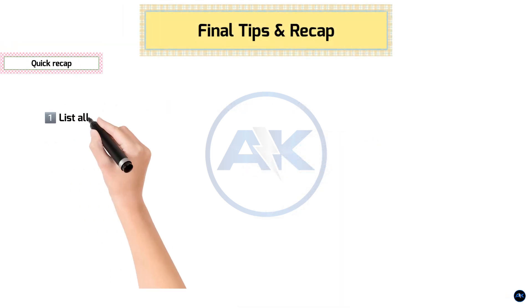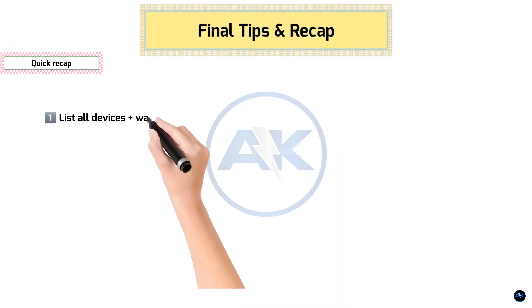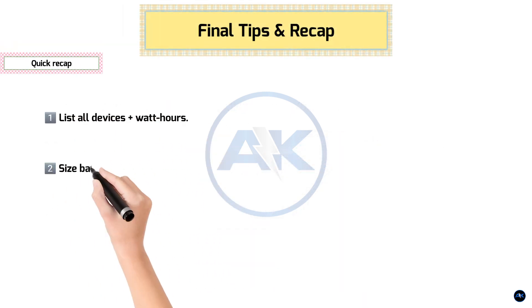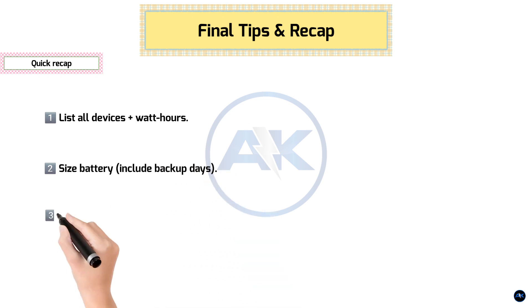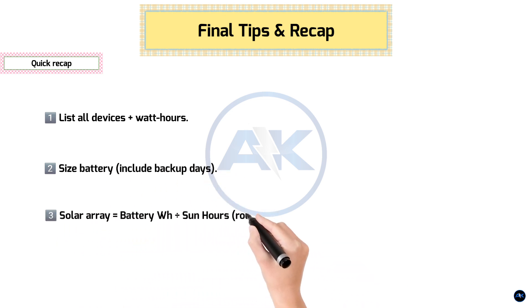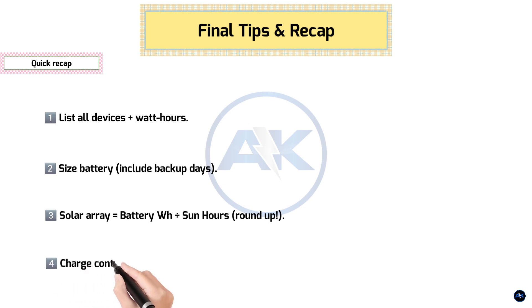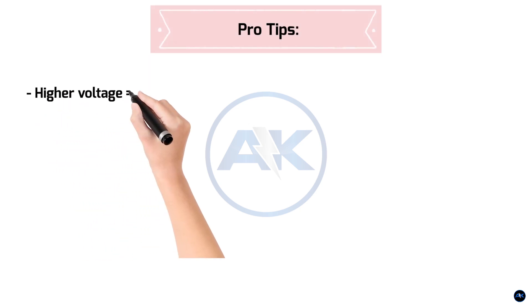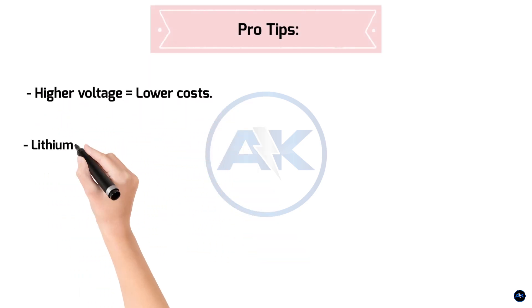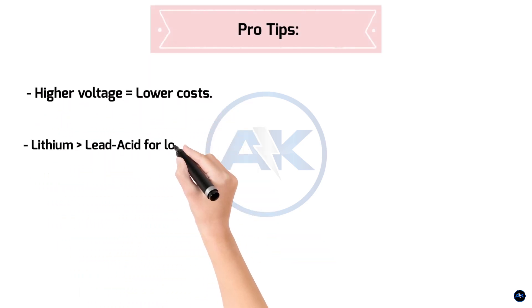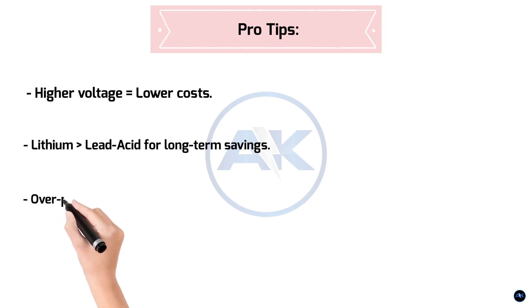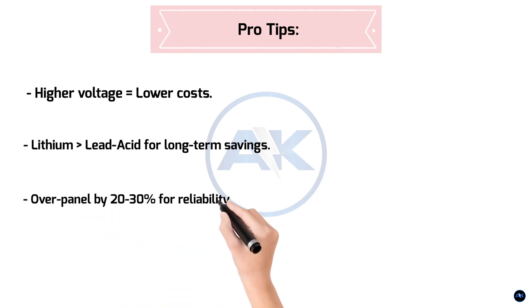Quick recap: 1. List all devices plus watt-hours. 2. Size battery, include backup days. 3. Solar array = battery Wh ÷ sun hours, then round up. 4. Charge controller = solar watts ÷ battery voltage. Pro tips: Higher voltage equals lower costs. Lithium beats lead acid for long-term savings. Over-panel by 20 to 30% for reliability.